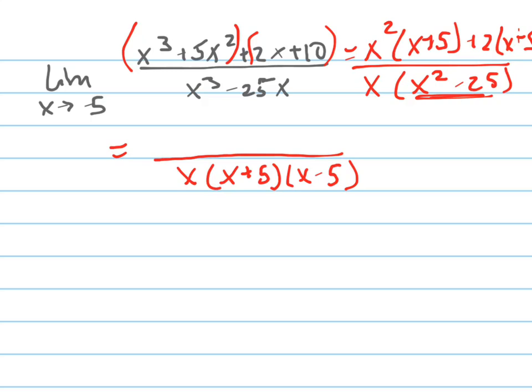Alright, so this is the limit. The limit as x goes to negative 5 of this top here factors. If I take an x plus 5 out, I'm left with x squared plus 2. And now, what can I do?